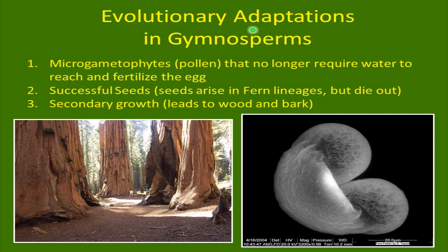What are the evolutionary adaptations in gymnosperms? One: they have microgametophytes — that's pollen. Pollen is a gametophyte; it's not just a sperm cell. It no longer requires water to reach and fertilize the egg — they can use wind and other means of dispersal via animals. Two: they have successful seeds, which arose in the fern lineages but died out. And then they have secondary growth, which leads to wood and bark.